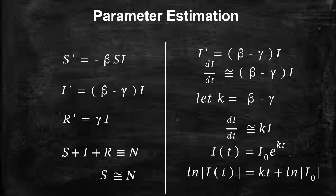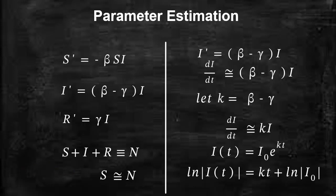We can estimate the value of k using available data. The data I'm going to use is COVID data, which I'll use to estimate parameter k, and then later we will estimate beta and gamma. But we are not going to jump immediately to estimate k, because k is the difference between beta and gamma, so let's first look at the theoretical perspective of how to compute gamma.